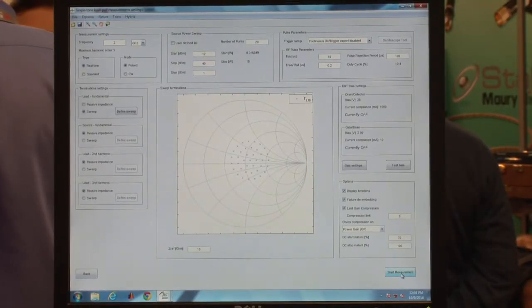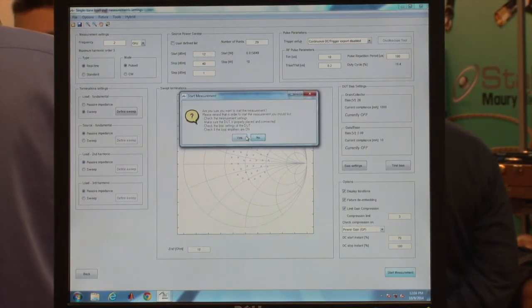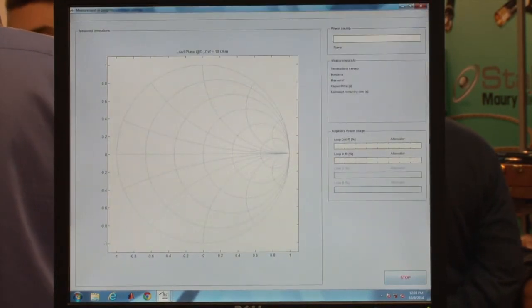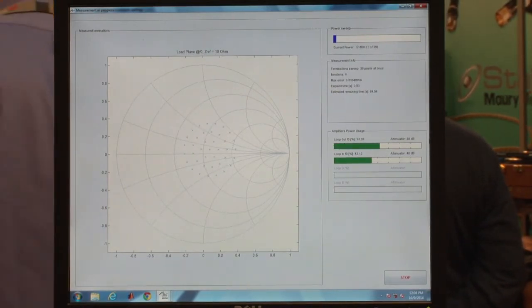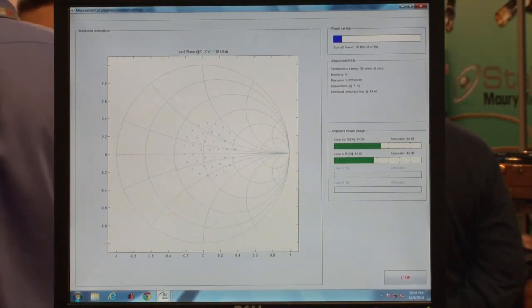So first what we did was we defined the pattern that we wanted to present impedances to our device under test. Then what you see here is the entire pattern of impedances being generated and converging nearly instantaneously.